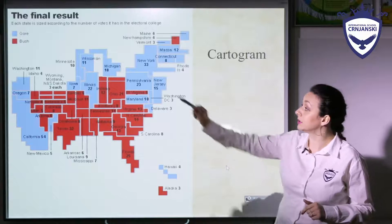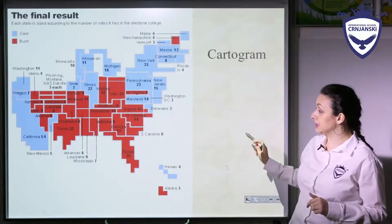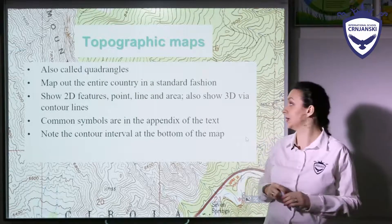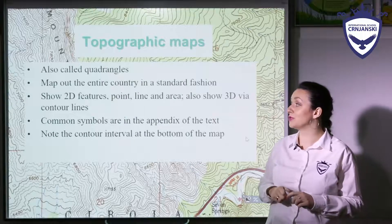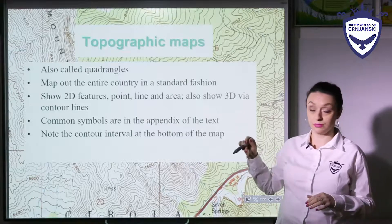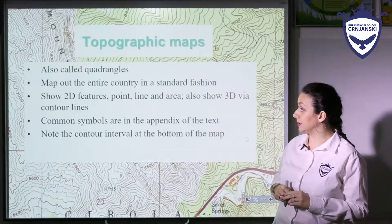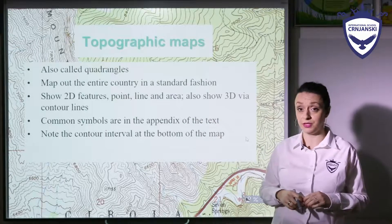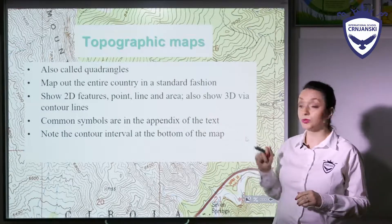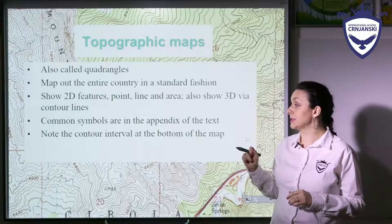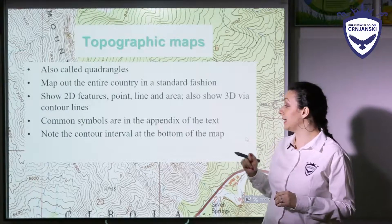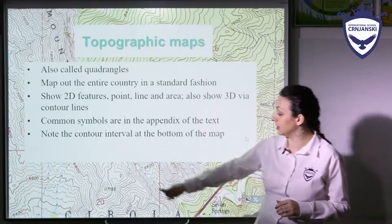In the end, there are topographic maps, also called quadrangles. They map out an entire country in a standard fashion. They can show 2D features — point, line, and area — and also show 3D features via contour lines. They use common symbols that are in the appendix of the text, and note the contour interval, which is usually given at the bottom of the map.